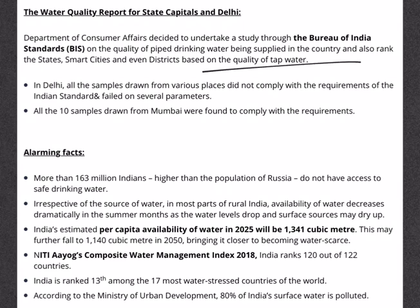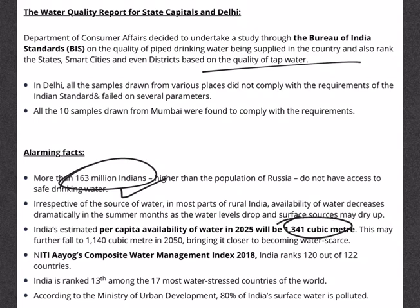The study revealed some interesting facts. More than 163 million Indians — higher than the entire population of Russia — do not have access to safe drinking water. In most parts of rural India, water availability drops dramatically in summer. India's estimated per-capita water availability in 2025 will be 1,341 cubic meters, falling further to 1,140 cubic meters by 2050. NITI Aayog's Composite Water Management Index states that 70% of India's water supply is contaminated, and India is ranked 120th among 122 countries in the Water Quality Index released by NGO Water Aid.